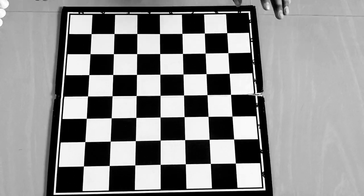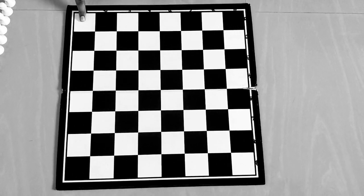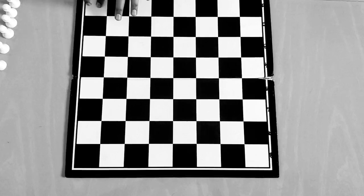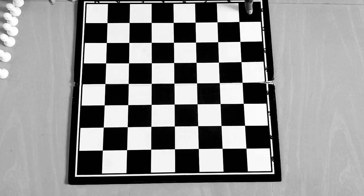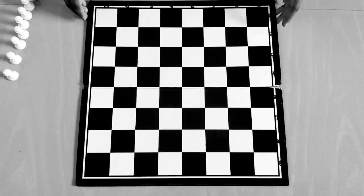This is a chessboard. The board has 64 squares. The white square should be on the right side.